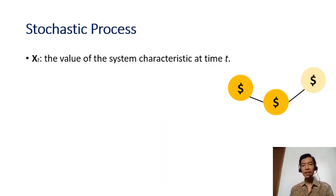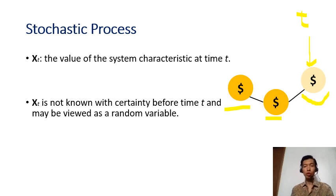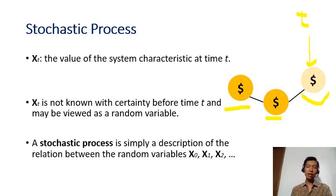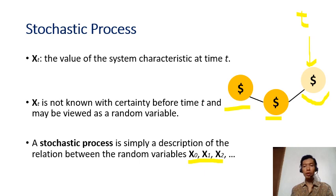If we give a notation X(t) as the value of the system characteristic at time t — for example, the price of a stock at time t — we cannot know for sure the price of that stock until time t arrives. There is a relation between the prices at these times. The stochastic process is the description or model of those values of the random variable from time 0 (X0), time 1 (X1), time 2 (X2), and so on — it describes the relation between the values of random variables at different times.